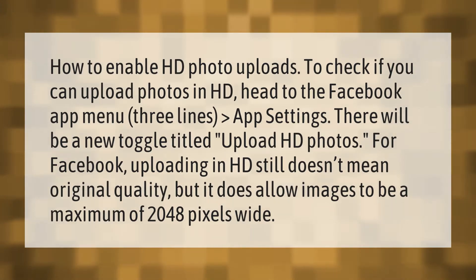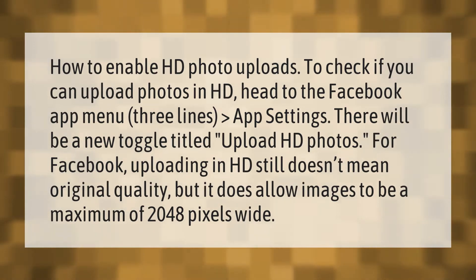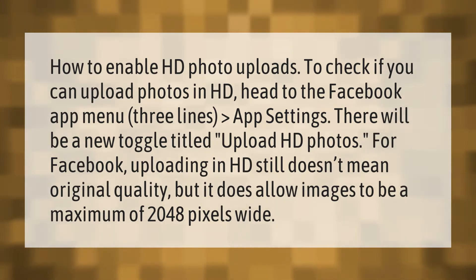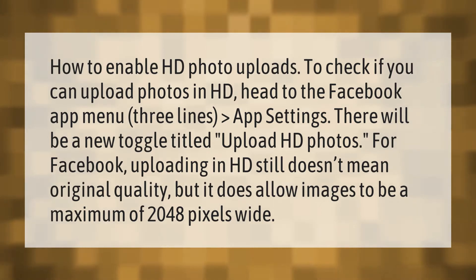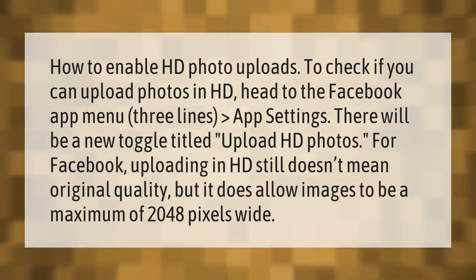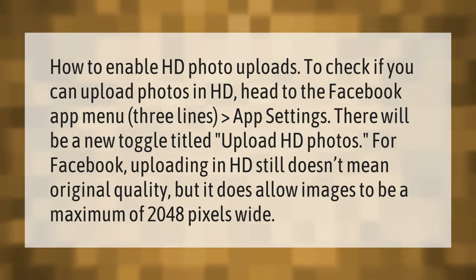How to enable HD photo uploads: to check if you can upload photos in HD, head to the Facebook app menu (three lines), then App Settings. There will be a new toggle titled 'Upload HD Photos'. For Facebook, uploading in HD still doesn't mean original quality, but it does allow images to be a maximum of 2048 pixels wide.